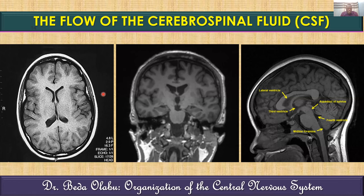In summary, CSF flows from the lateral ventricles through the interventricular foramen of Monro to the third ventricle, then through the cerebral aqueduct of Sylvius to the fourth ventricle. The central canal of the spinal cord also drains into the fourth ventricle.